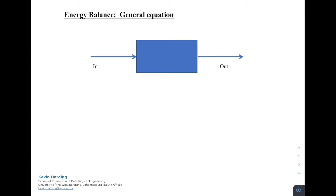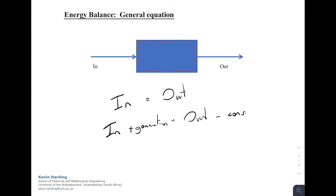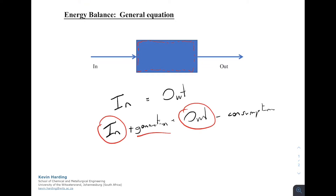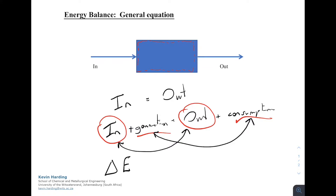In defining the energy balance equation, we start with an in versus an out: the energy going in through the flow is equal to the out. The system we are using is the red dotted square, and you can get accumulation inside that square. As with the mass balance, we have: in plus a generation term is equal to out plus a consumption term. We group the in and out together, and the generation and consumption together, giving us the change in energy inside the system.